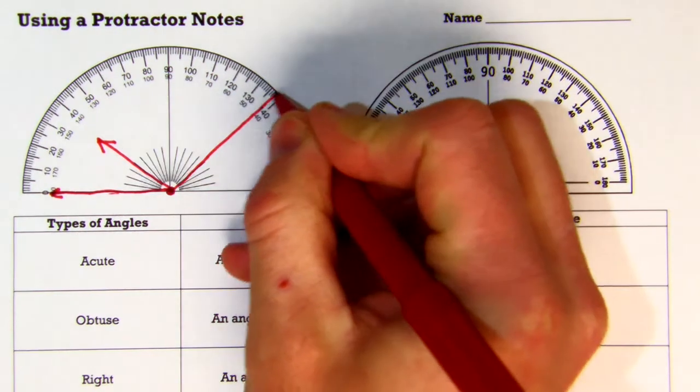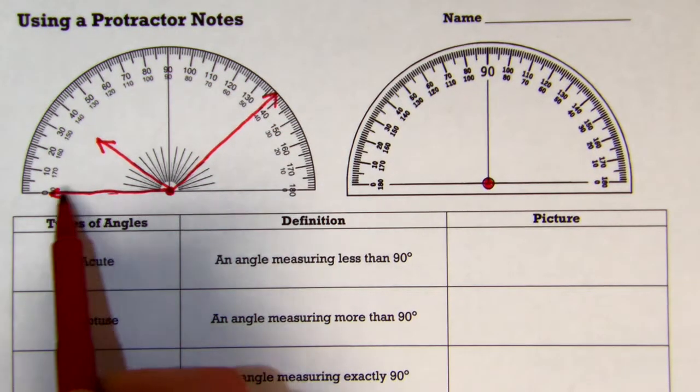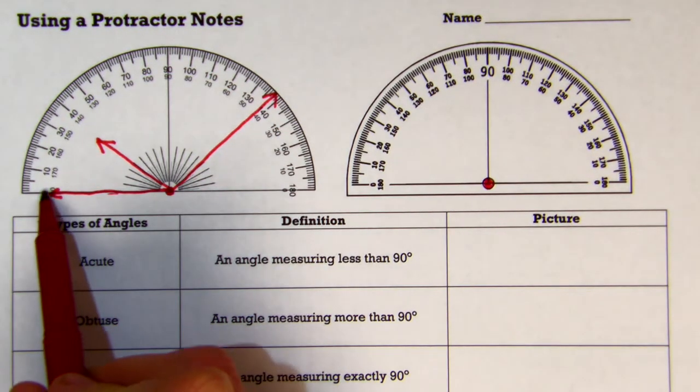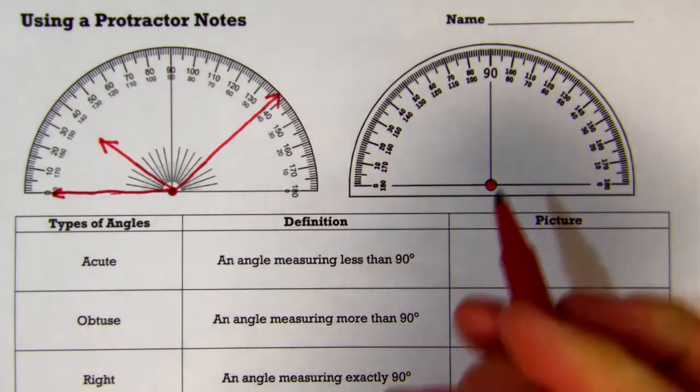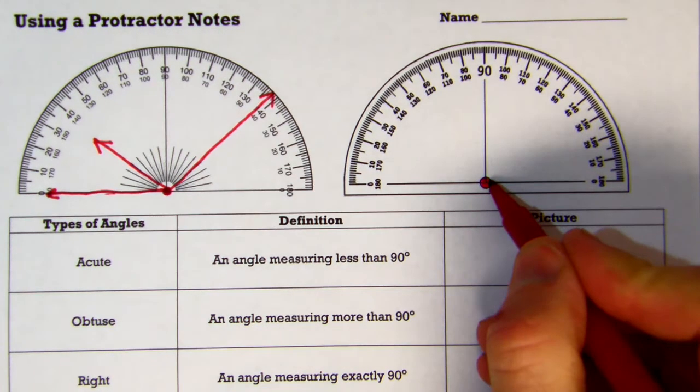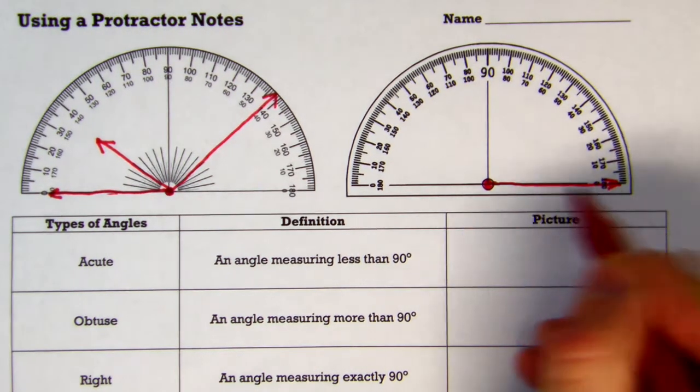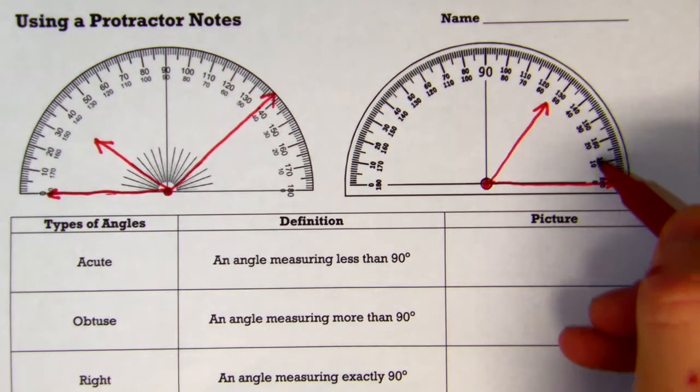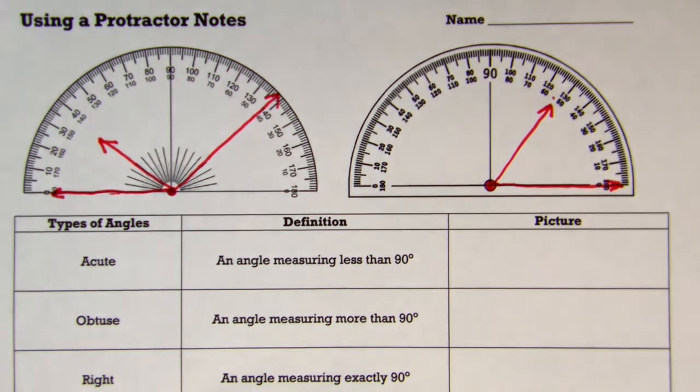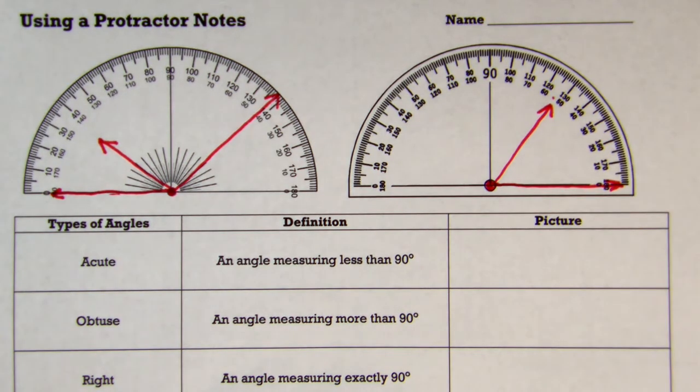If your angle, say, goes out this way but still has this bottom line right here, you're still going to start from here and you're going to go all the way around, all the way over here to 130 something. So if your angle goes this way along the bottom there, that's the 0 you're going to start with, so in this case you would start with the inside numbers this way. It's very common to make a mistake to use the outside number or the inside number the wrong way. The other way to make sure you're measuring correctly is to think about what type of angle you're measuring.